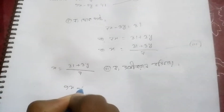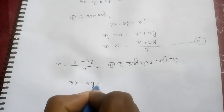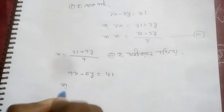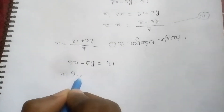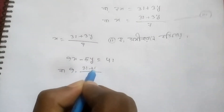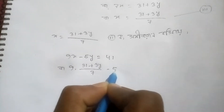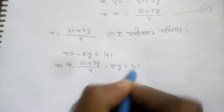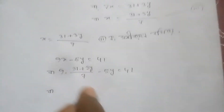9x minus 5y equals to 41. I can see. 9x minus 3y equals to 41, minus 5y equals to 42. I can see 9x minus 5y.